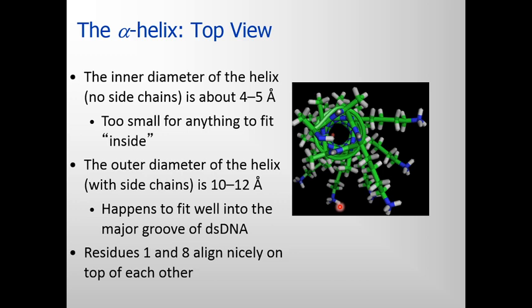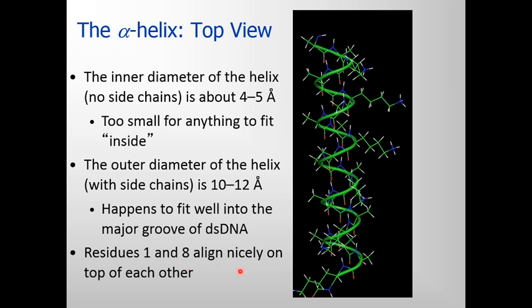If you have taken biology, you must have heard about transcription factors. Transcription factors, which include proteins, bind double-stranded DNA. One way in which proteins do that is by interacting with double-stranded DNA using its alpha helices — a classic example is zinc fingers. In addition, residues 1 and 8 align nicely on top of each other in an alpha helix. So 8 and 1 fall exactly on top of each other — that's what is meant by nicely aligning on top of each other.